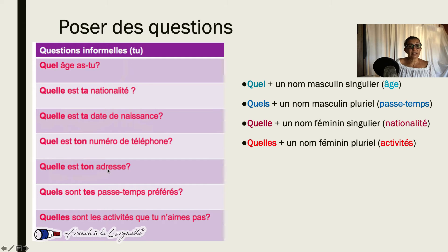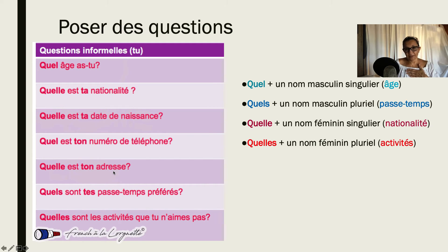Feminine for address. But why do we use ton? Remember we have a vowel sound, so we need to use the masculine form for the liaison. Ta adresse wouldn't work. Ton adresse. And we cannot do t-apostrophe because that's what we use for reflexive verbs.